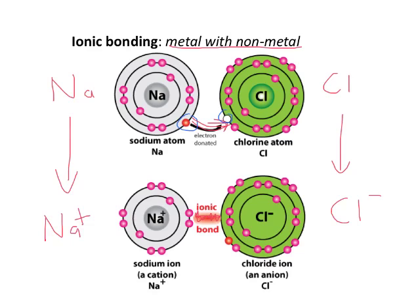Sodium has lost its outer shell, but it's dropped back to a full valence shell. And the chloride has filled its valence shell by stealing an electron from the sodium atom. So they both end up with full valence shells.